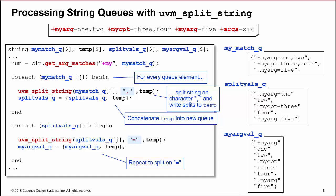Then we repeat the process on splitValsQueue, splitting on equals to separate the argument and value for every plus arg. Note that the character for splitting each string is omitted from the results. Now we can process myArgValQueue to act on the argument values.